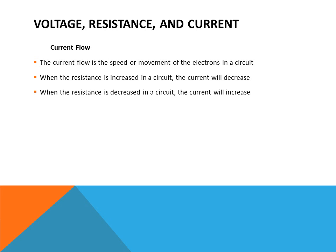Current is the flow of electrons. The electrical flow is the speed or movement of electrons in a circuit. When resistance is increased in a circuit, the current will decrease. When resistance is decreased in a circuit, the current will increase.